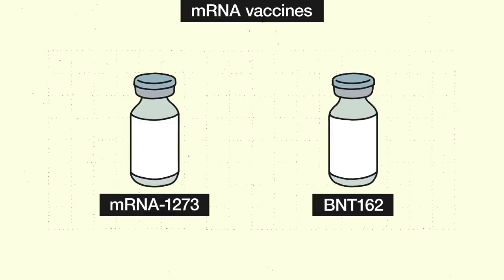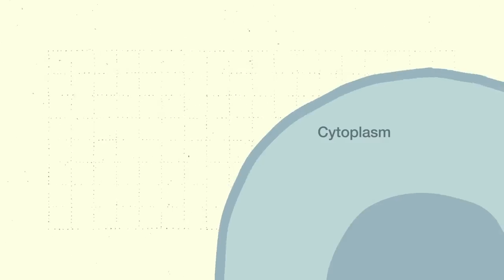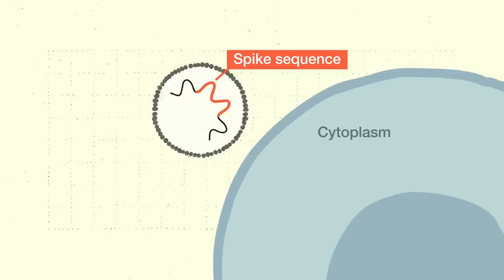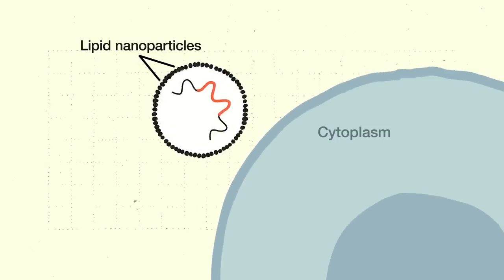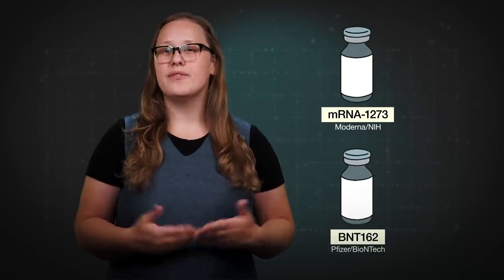These two candidates in the Warp Speed portfolio are mRNA vaccines. This one was developed by Moderna and the NIH and was the first candidate to enter clinical trials in the U.S., with this one from Pfizer and BioNTech following not long after. Naked mRNA cannot easily cross cell membranes and is very susceptible to degradation, so in both vaccines, the mRNA coding for the spike is encased in lipid nanoparticles. Both candidates are currently in phase 3 trials.